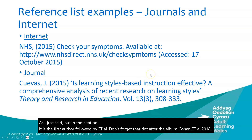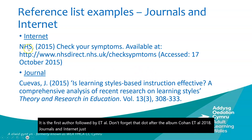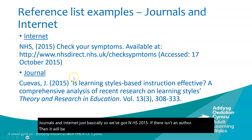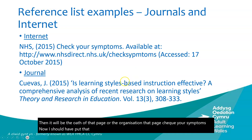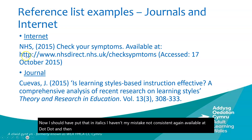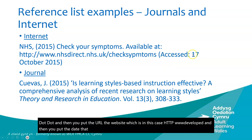For journals and internet sources: if there isn't a named author, it will be the organisation — for example, NHS (2015). I should have put the title in italics — another consistency mistake. Then 'Available at:' followed by the URL, and the date you accessed it, for example: accessed 17th October 2015.